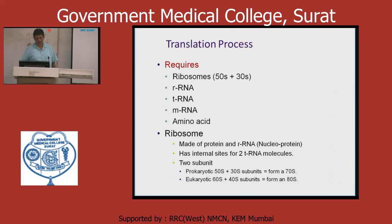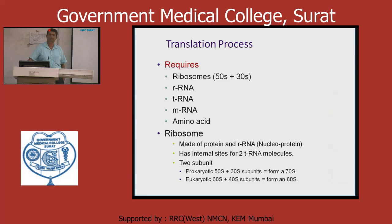In prokaryotes there is a 70S ribosome made up of 50S and 30S subunits. In eukaryotes there is an 80S ribosome made up of a 60S large subunit and a 40S small subunit.